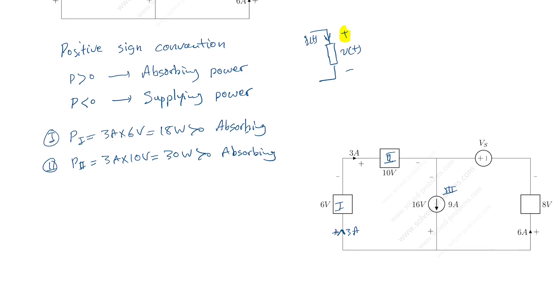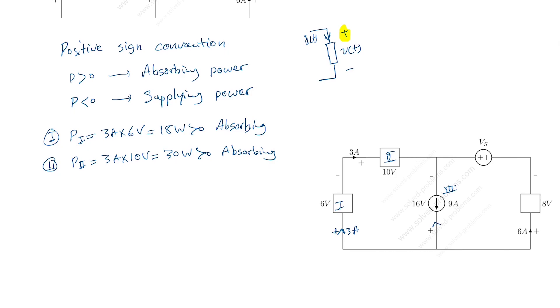So that's the same thing. If nine amp is going from top to bottom, that means that minus nine amp is going from bottom to top. Now for this minus nine amp, you have positive sign convention with this 16 volt voltage. So here for the third element, P3 is actually minus nine amp multiplied by 16 volt. And that's minus 144 watt, which is less than zero. So this element is supplying, unlike the other two elements, supplying power.